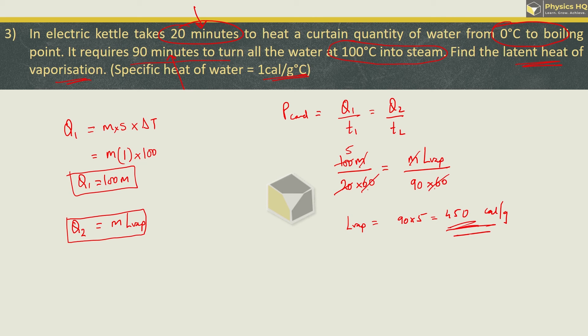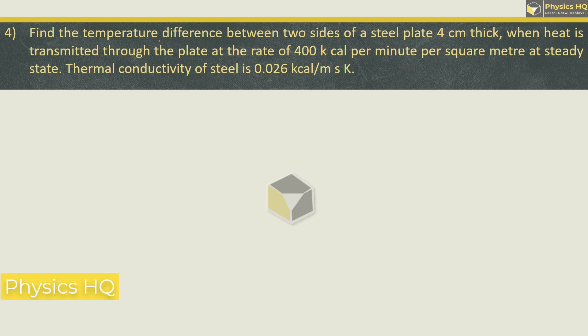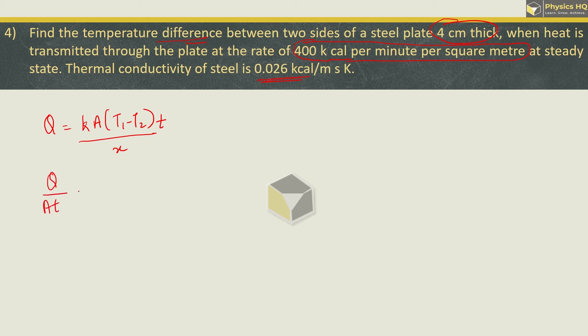Find the temperature difference between two sides of a steel plate 4 cm thick when heat is transmitted through the plate at the rate of 400 kilo calorie per minute per square meter at steady state. Thermal conductivity of steel is 0.026 kilo calorie per meter second kelvin. We all know this formula: Q equals k into A times T1 minus T2 divided by x into t. What we are given in question is Q upon At which is 400 kilo calorie per minute per square meter.